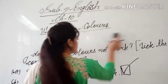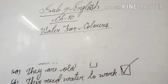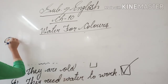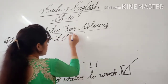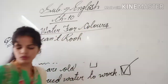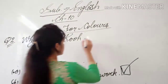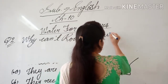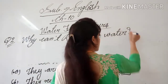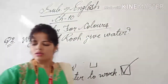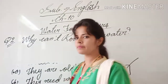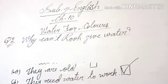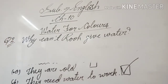Question number 2: Why can't Roo give Tutu water? Do you know who Roo was? Yesterday when you were reading the story, I told you there was an animal named Roo. Which animal was that? It was a bear. So why can't Roo give water to Tutu?